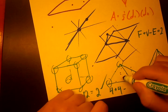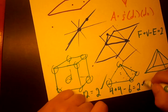How many edges? 1, 2, 3, 4, 5, 6. So that gives us 2 again.